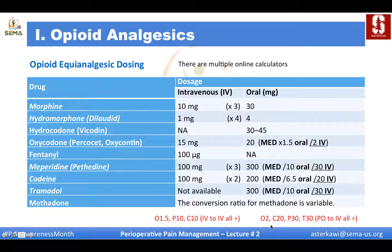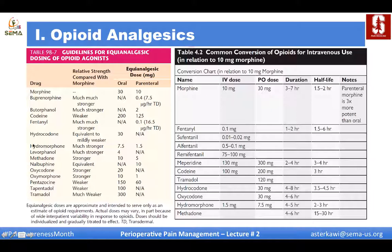A mnemonic for converting oral opioids to IV morphine — you always divide: oxycodone divide by 2 (O2), codeine divide by 20 (C20), pethidine divide by 30 (P30), tramadol divide by 30 (T30). For IV to IV conversions, divide oxycodone by 1.5, pethidine by 10, and codeine by 10. Additional tables are provided for other opioids not covered in the first table.